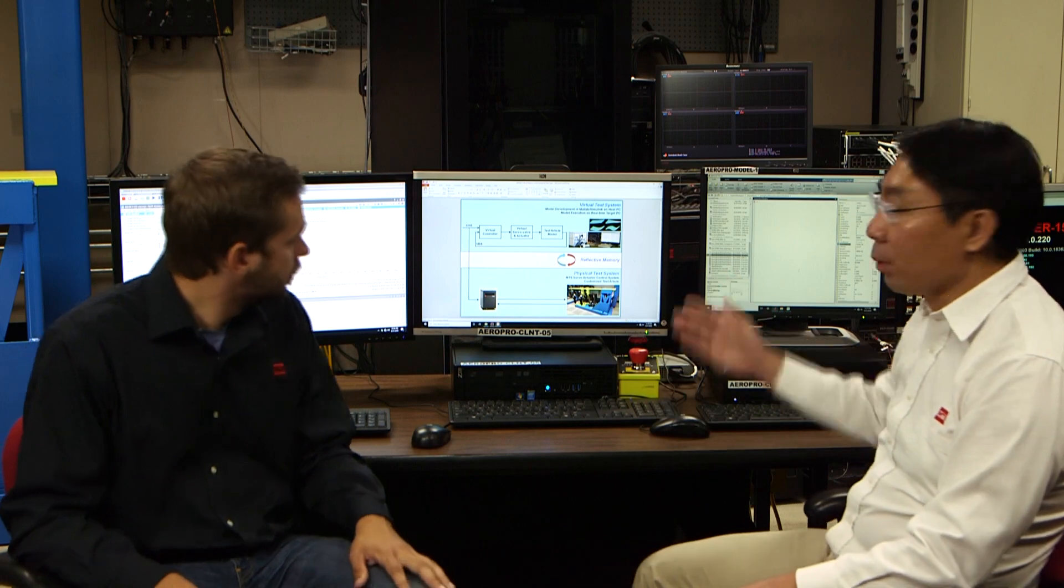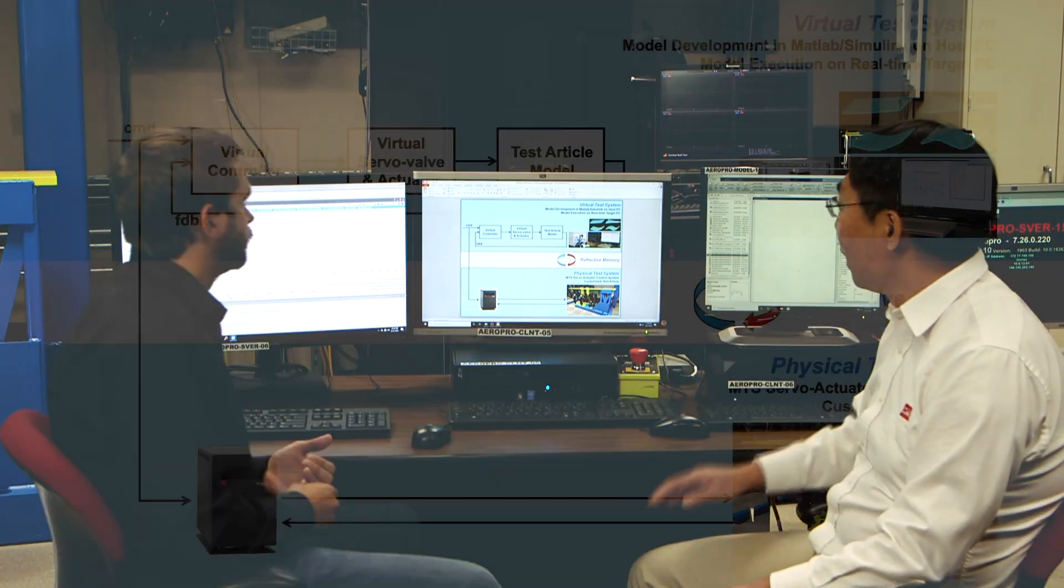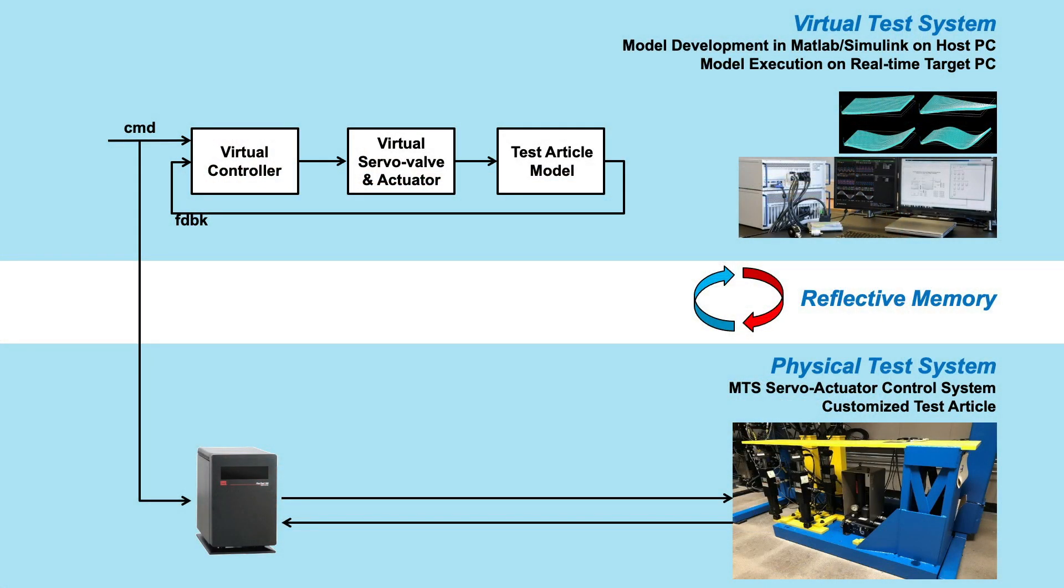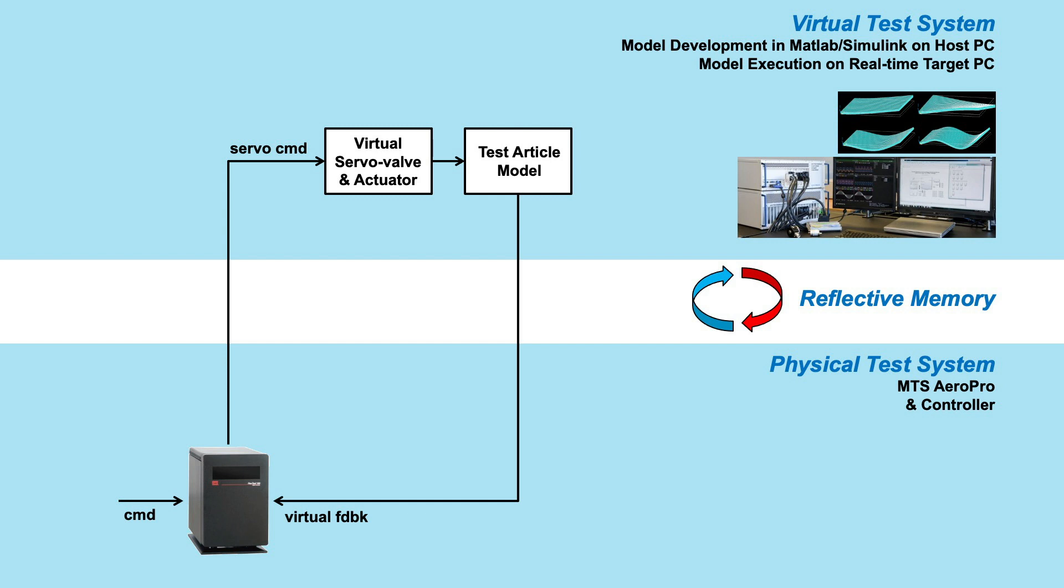Okay. Yes, so here we prepared some simple block diagram. So what we have done last time is that we run the virtual system and the real system basically independently. They are running in parallel. But from today on, we actually are going to remove the virtual controller model. Instead, we will directly use the real controller to generate the servo command and drive the virtual plant. And then the model will also give a virtual feedback into the controller for you to close the loop.